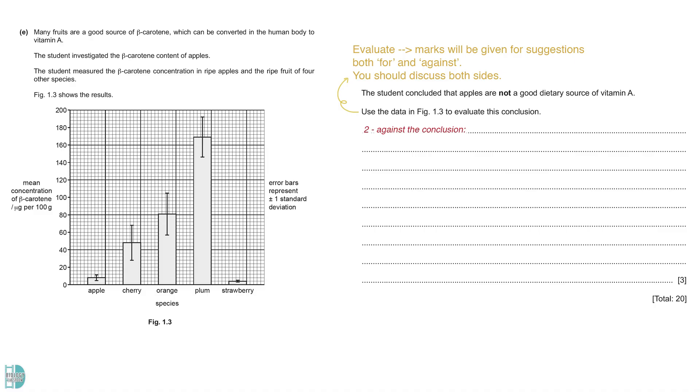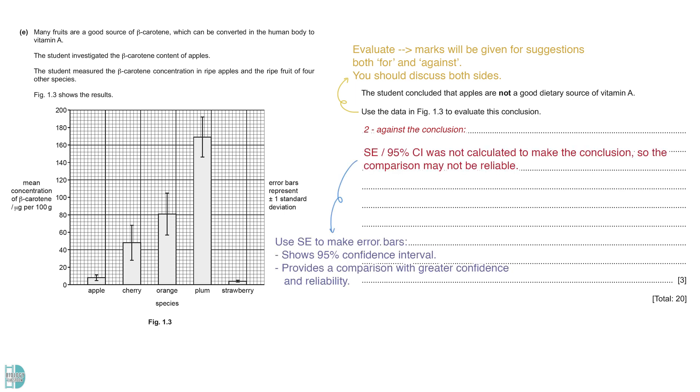However, there are some aspects we can use to go against the conclusion. To make a more reliable comparison, the standard error should be calculated. We can use it to make error bars that show the 95% confidence interval. It provides a comparison with greater confidence and reliability compared to the error bars made by using standard deviation. Besides, statistical tests such as t-test should be used to compare the fruits two by two. It is also a more reliable method of comparison.